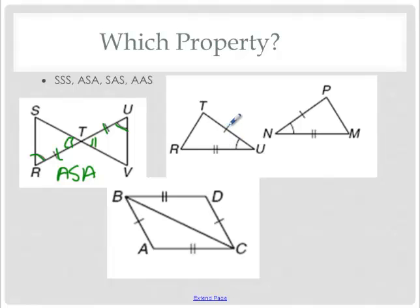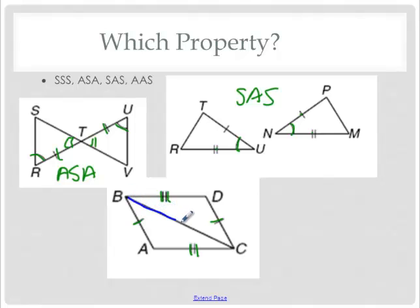Over here on the right, we have two sides and an angle in between — that's side, angle, side. Looking down here, we have a side and a side, and another side and a side. The middle side is special because both triangles are using BC. Since they both use it, we apply the reflexive property to say that side is congruent to itself. So this one is side, side, side.